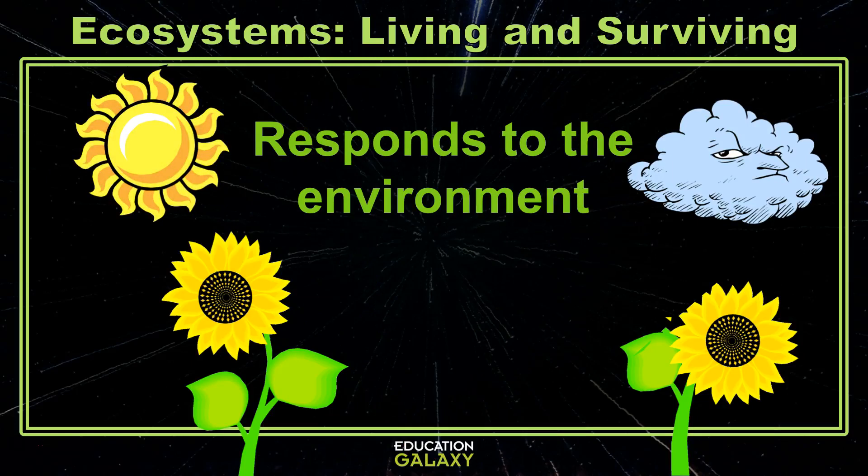Most of the time in an ecosystem we just focus on the living things there because that's generally what's moving, growing, changing, responding, and eating. But a lot of times the non-living factors can play a huge role in shaping and affecting the future of the living factors. Things like sunlight can affect plants in huge ways, but these non-living factors can also affect animals.